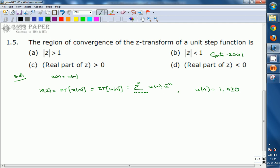Then this summation becomes X(Z) equals summation N equals 0 to infinity, where U(N) is nothing but 1, times Z power minus N. Then it equals summation N equals 0 to infinity Z power minus 1 whole power N.